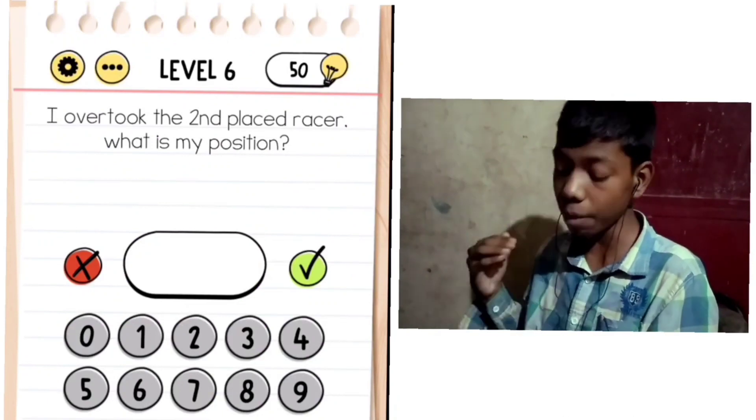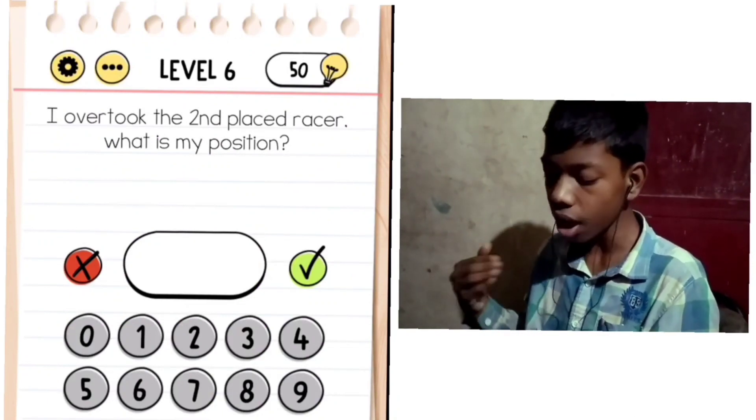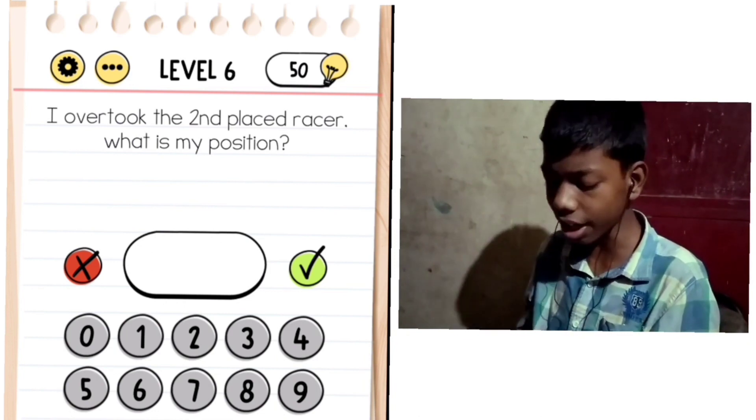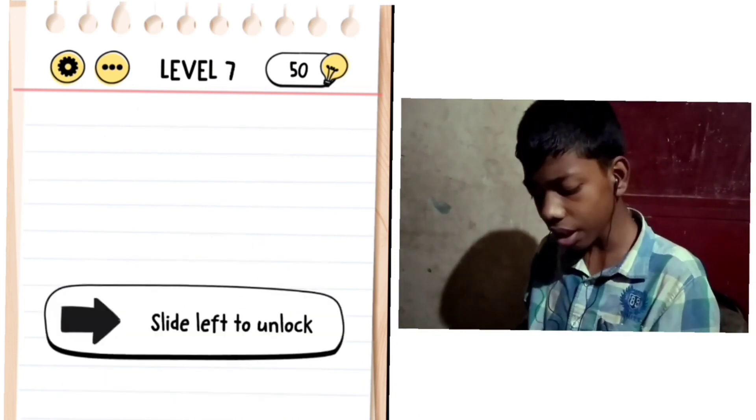Level 6: I overtook the 2nd place. What is my position? Here we have a question. If we overtook 2nd place in the race, then we are now in 2nd place. Simple. Level 7: Slide left to unlock.